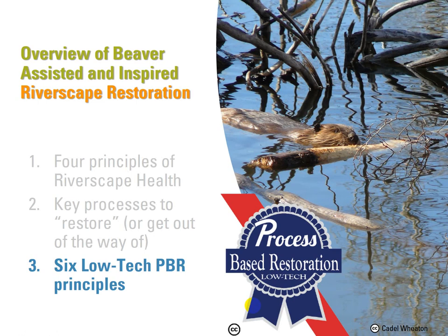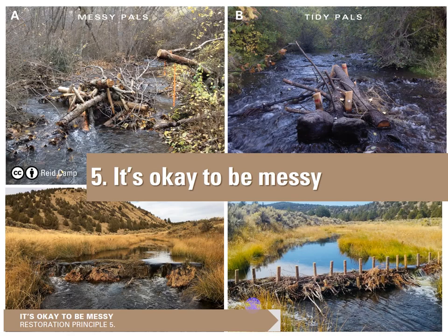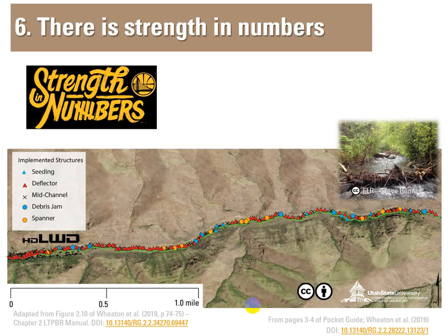When translating this into principles for restoration actions, we have six principles. Number five: it's okay to be messy. We're so used to building houses or bridges — we don't have to make our riverscape structures perfect. We can make them cluttered and messy, taking inspiration from beaver who make messes. There's strength in numbers — a fundamental principle. We need to scale up to the scope of degradation with a lot of redundancy. These systems have been starved for so long, we've got to get some calories back in. Here's a map of just two miles of a much bigger riverscape restoration project — look at the density of structures, all different types of woody debris structures.